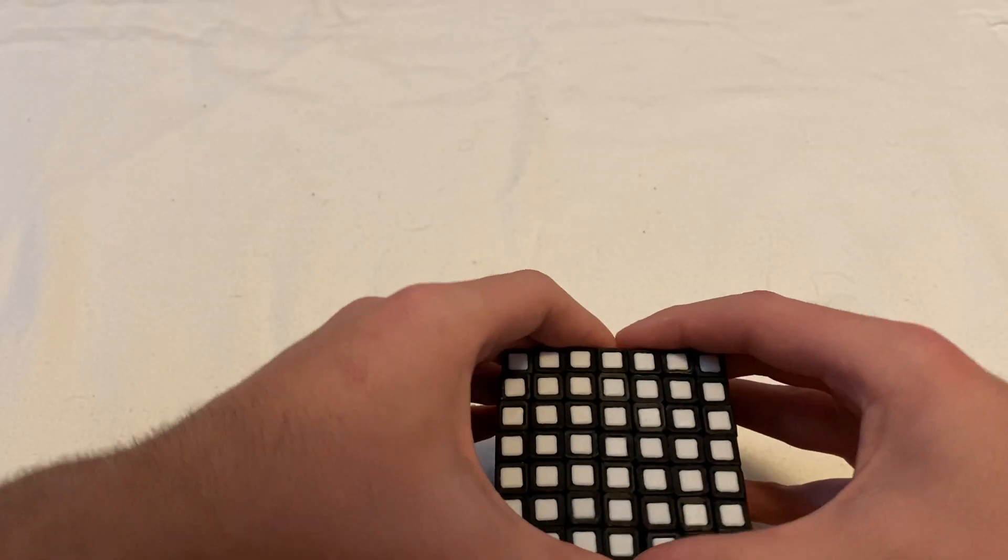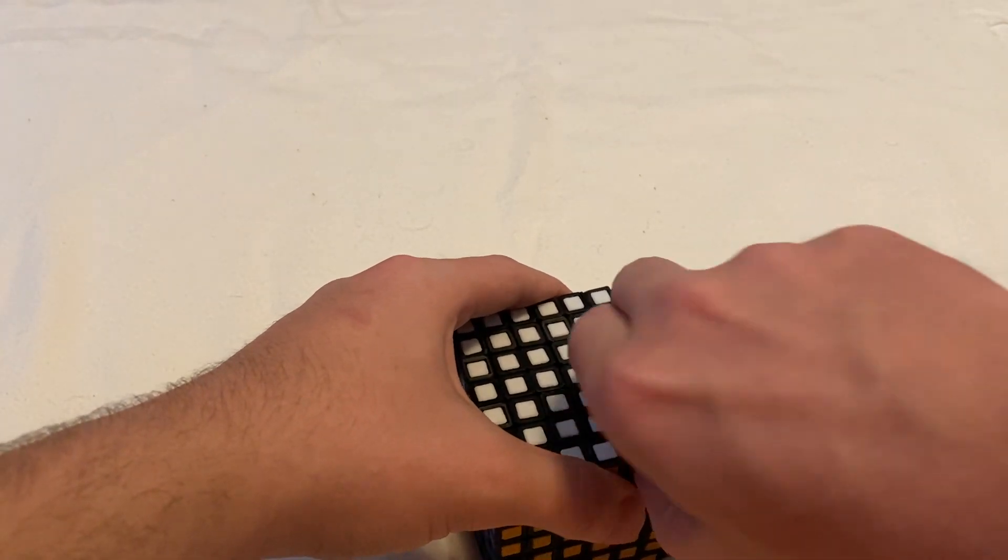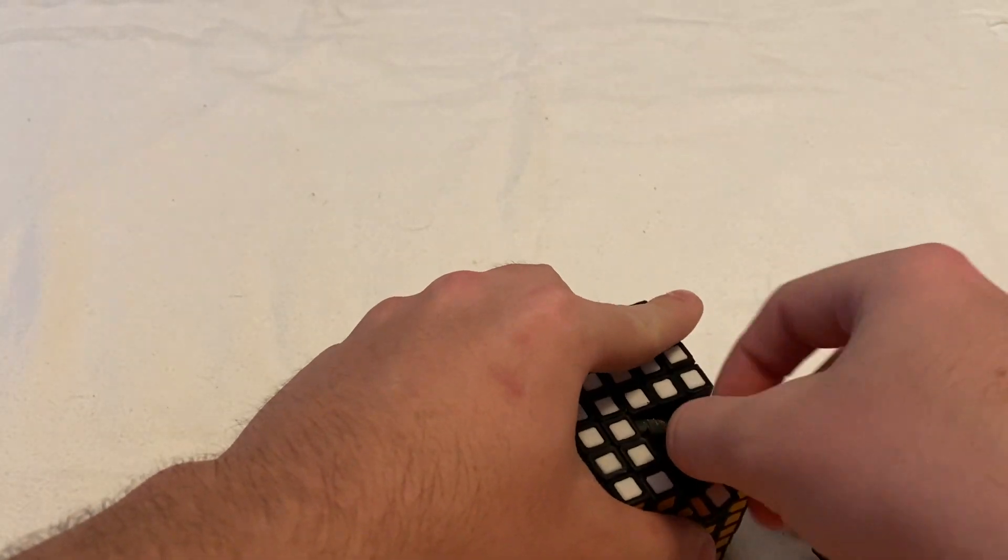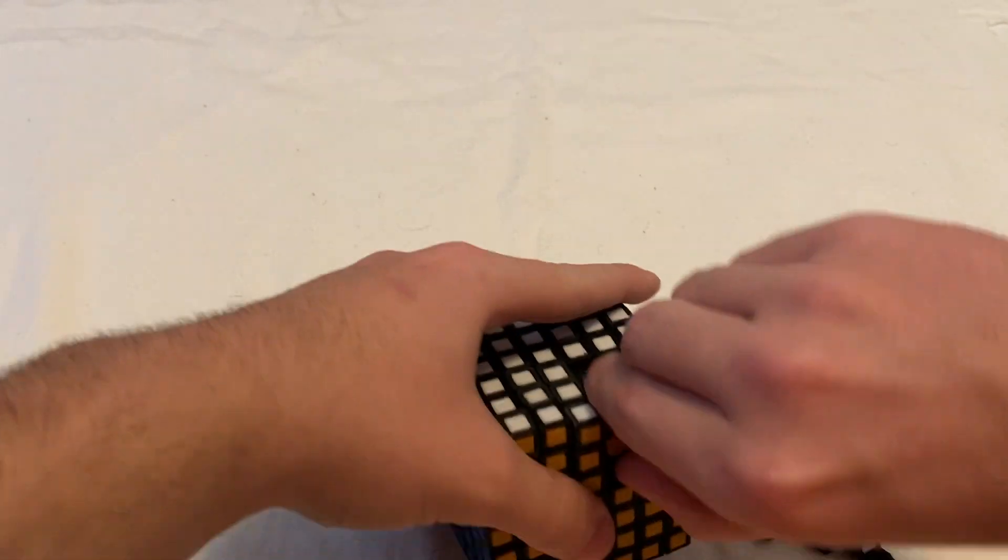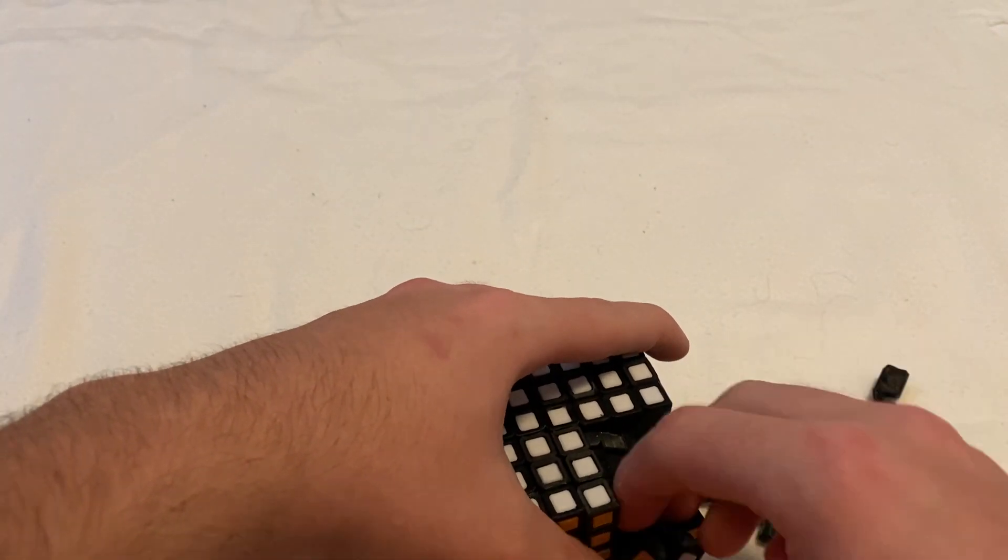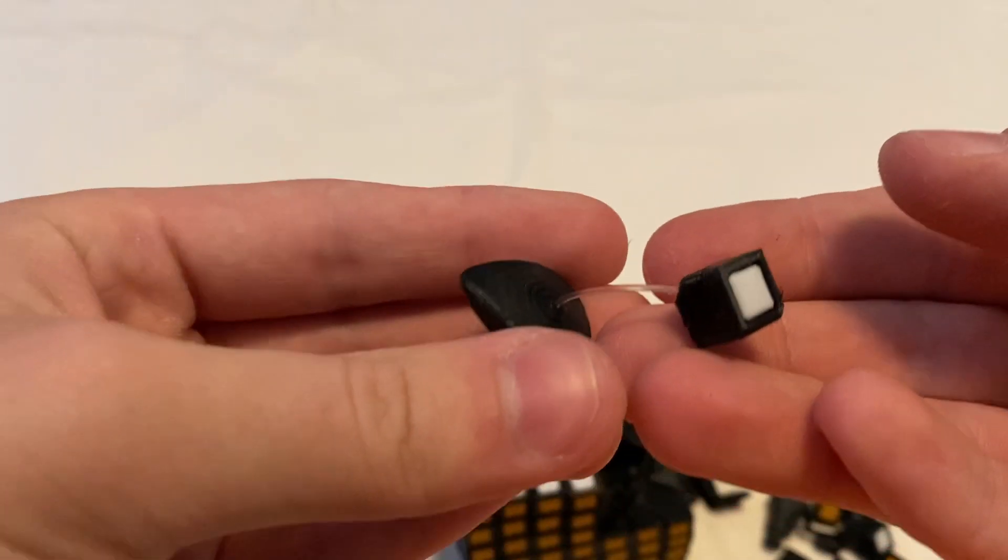So now I'm going to show you the pieces. I'm just going to take out a corner section. So this is what a corner looks like.